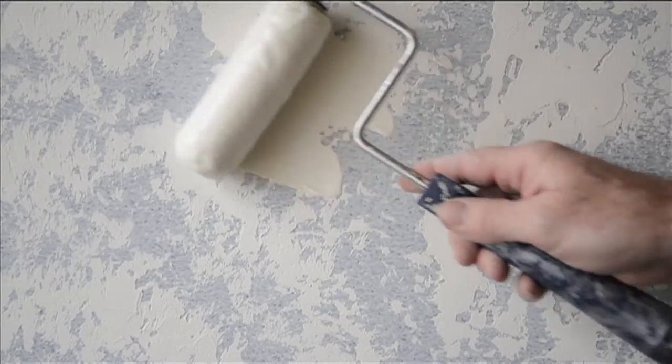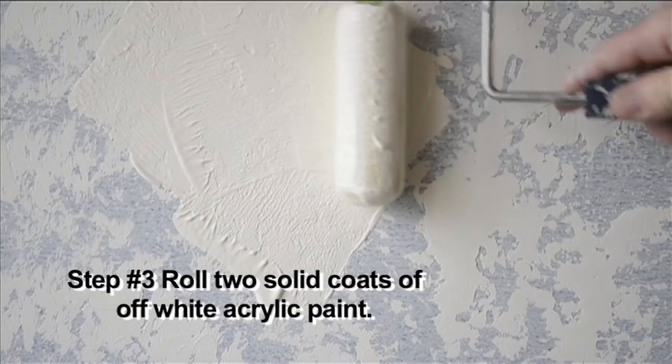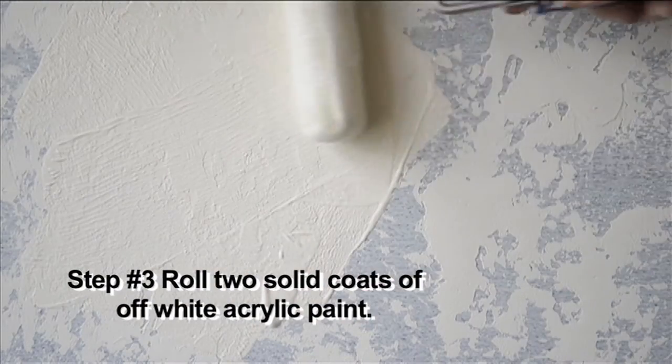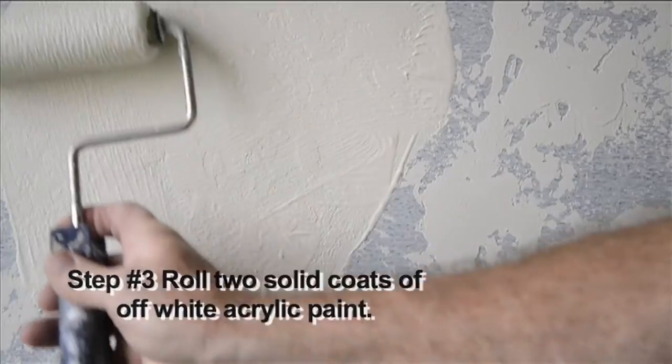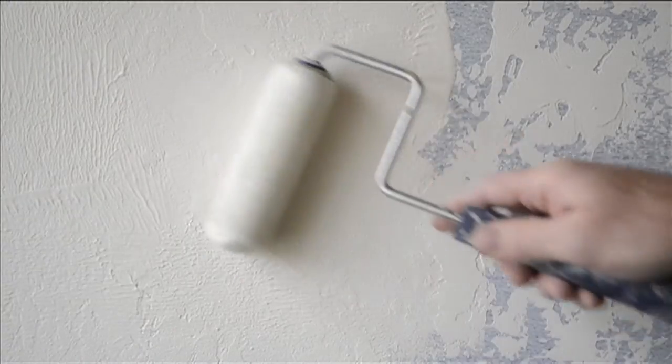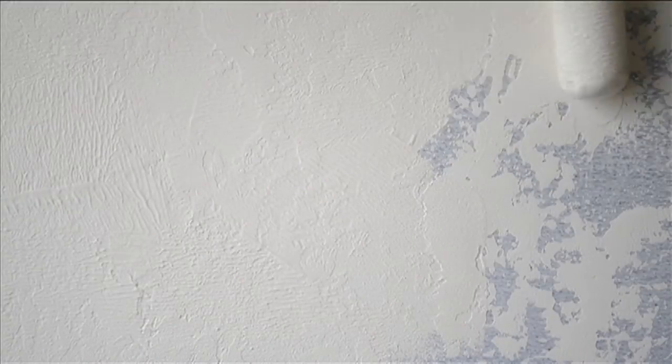The next step for our finish will be to put a solid coat of an off-white paint on the surface. We're just going to roll that on. You can use a brush along the edges and corners of the room.